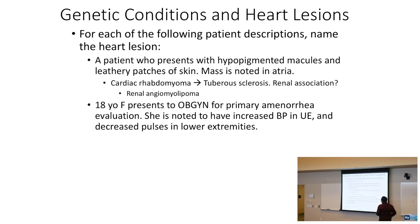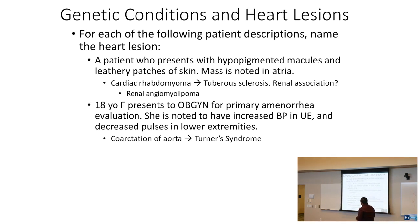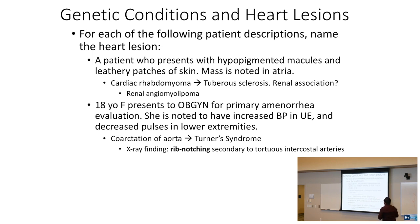An 18-year-old presents to the OB-GYN for primary amenorrhea. She is noted to have increased blood pressure in the upper extremities and decreased pulses in the lower extremities. What are we thinking about? Turner syndrome. Turner syndrome in particular is related to coarctation of the aorta. The x-ray finding is going to be rib notching, secondary to the intercostal arteries that get really engorged because of the coarctation.